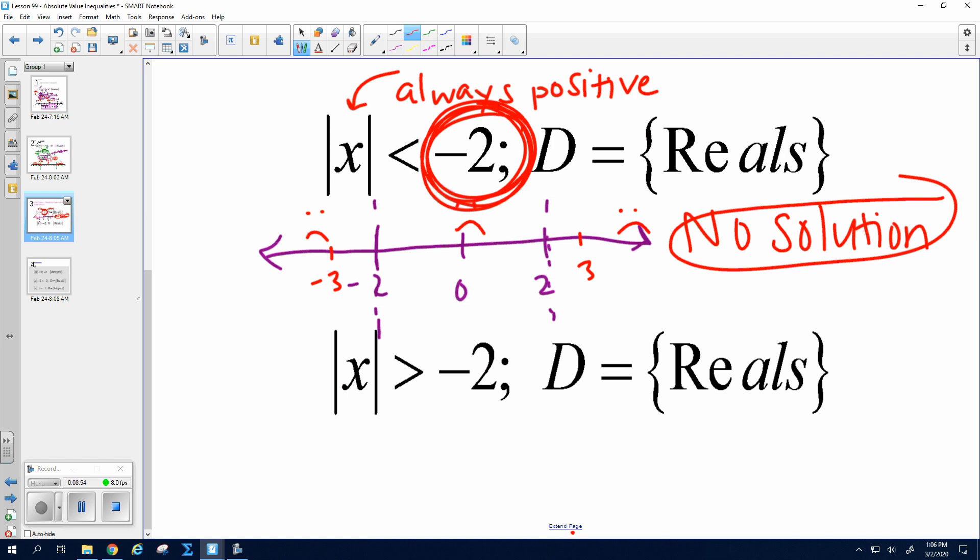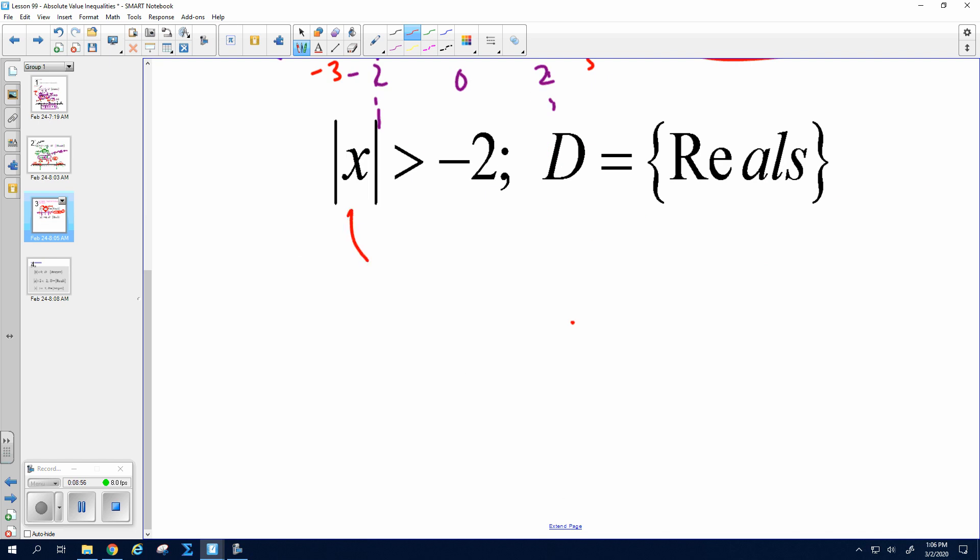So same thing if this is always positive. Now I have greater than. No matter what I plug in, what's the absolute value of negative 100? Positive 100. Now is that true? Yes. What about 0? 0 greater than negative 2? Yes. What about 3? Yep. Everything is true.